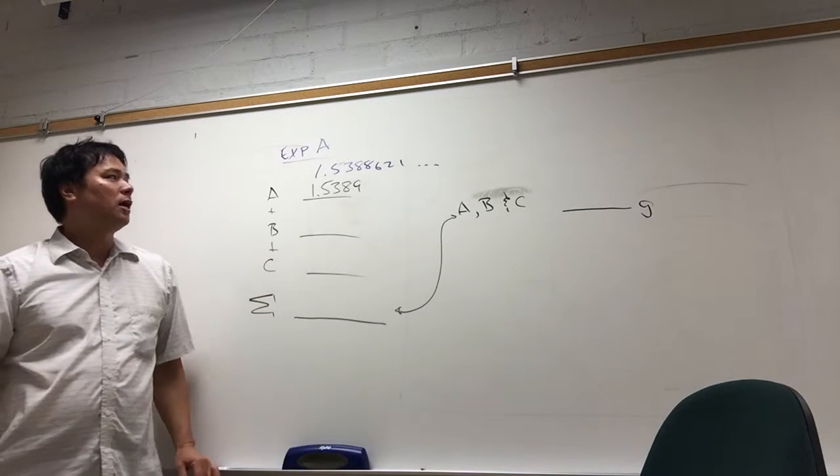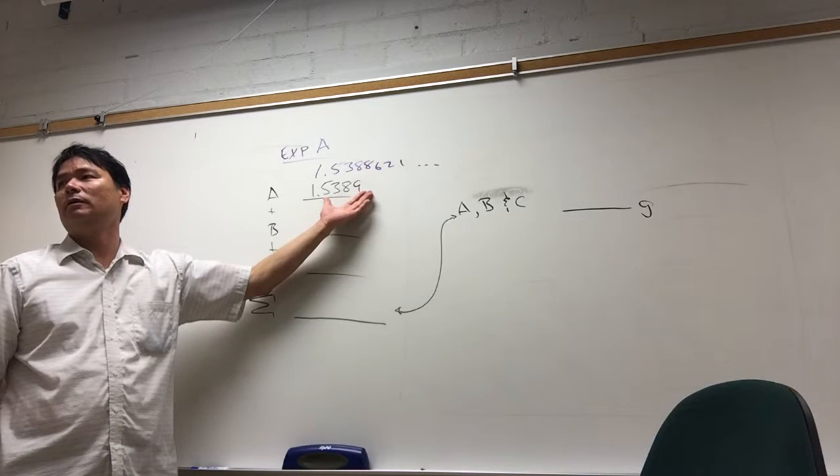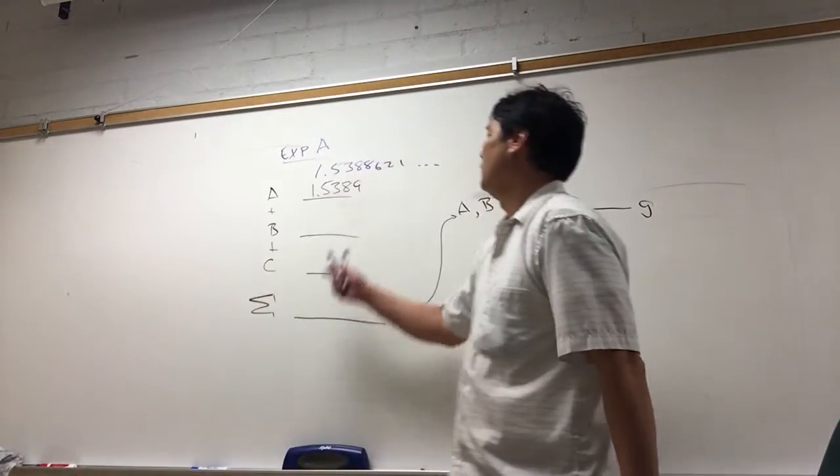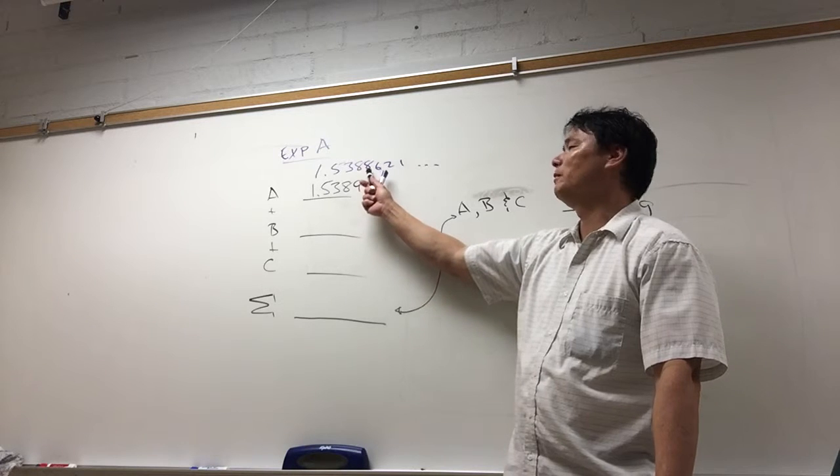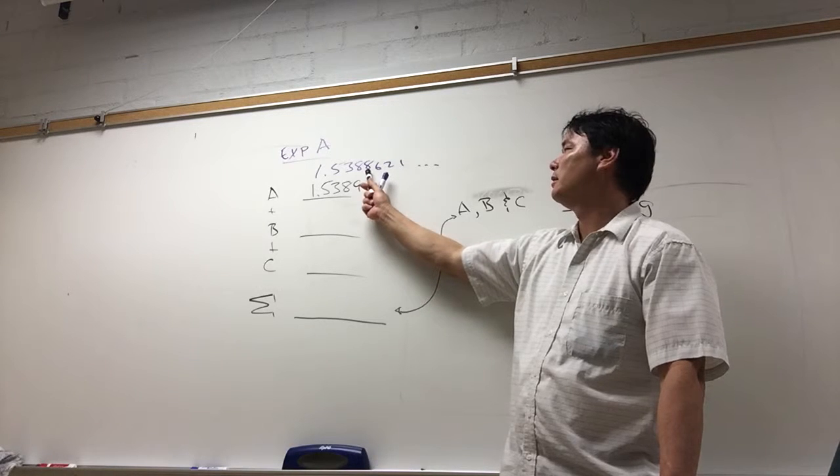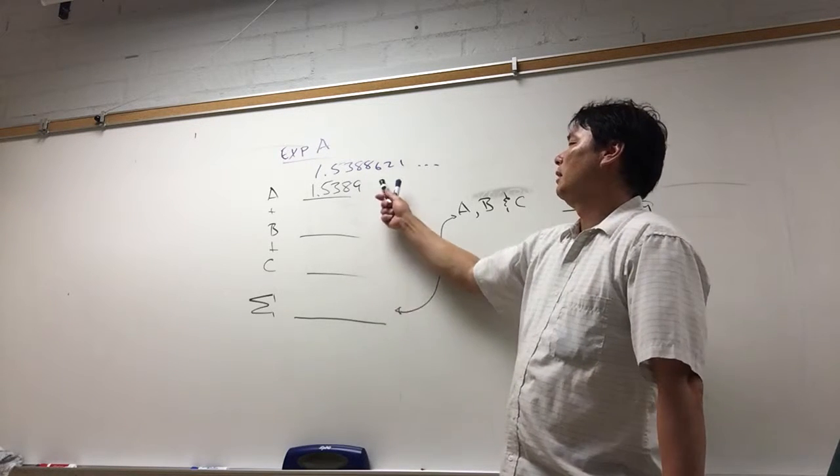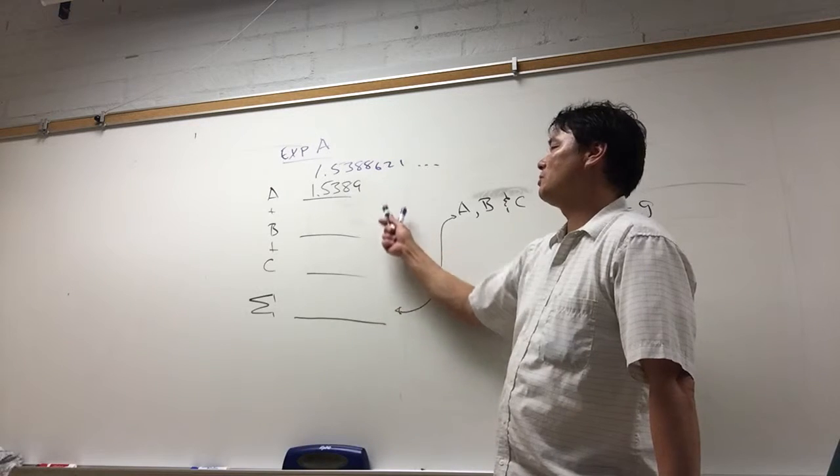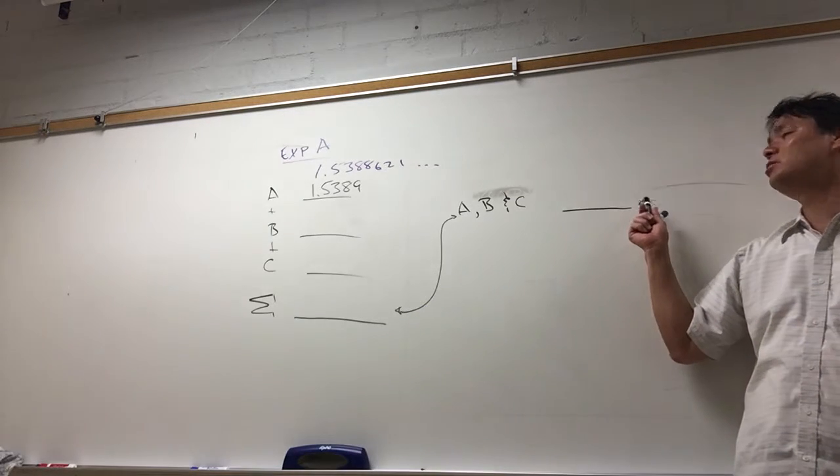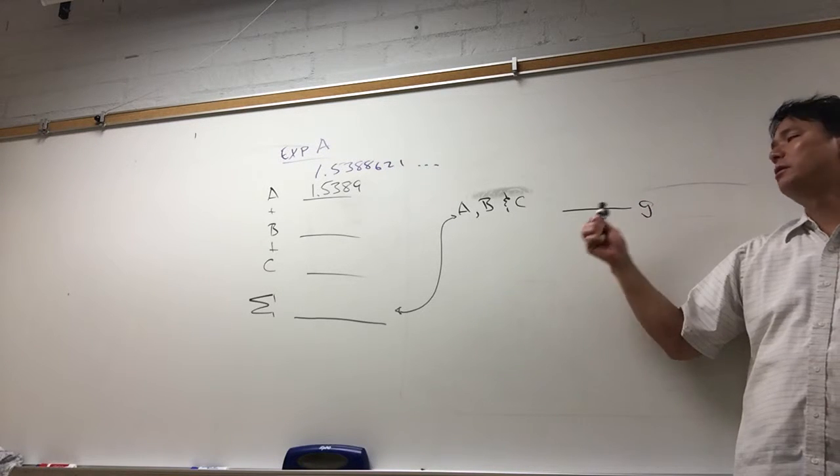And so each time we take a measurement, we introduce uncertainty. Every time you make a measurement, you introduce an error. There's an error associated with that measurement. The error in this case is if the actual mass were 1.5388, our balance is incapable of registering that. The balance has got to round that second 8 up to a 9.